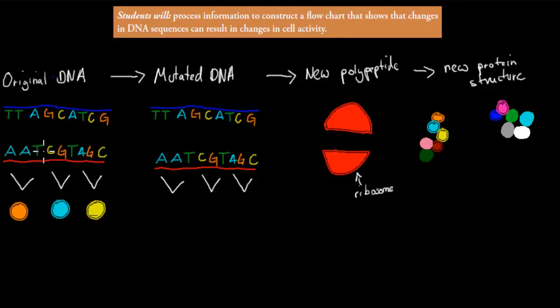Usually these bases, let's say they usually code for these amino acids. Let's say orange, blue, and yellow amino acids. So AAT codes for this one, CGT codes for this one, and AGC codes for this one.